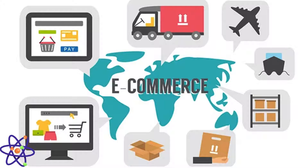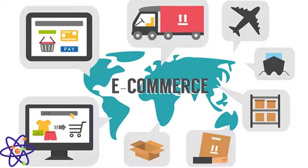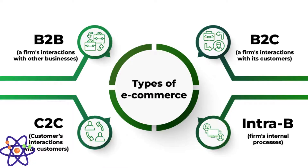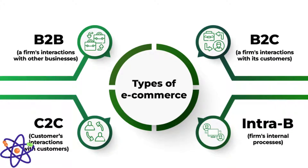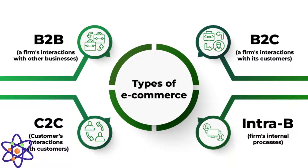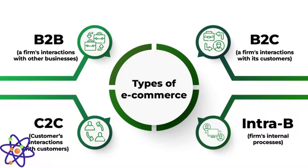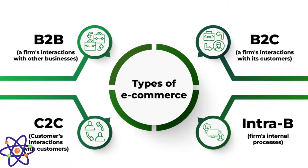B2B involves transactions between businesses, such as a manufacturer and a wholesaler, while B2C is the most common form where businesses sell directly to consumers. C2C platforms facilitate transactions between individual customers, and C2B allows consumers to sell products or services to businesses. Prominent examples include Amazon, which dominates the B2C space, eBay, a leader in C2C transactions, and Alibaba, a major player in the B2B market.